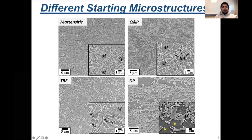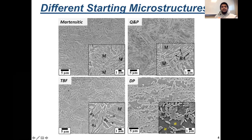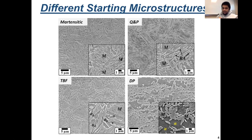We generated a fully martensitic microstructure. We generated a quenched and partitioned microstructure having martensite and retained austenite. We generated a TBF (trip-bainitic ferrite) microstructure through austempering having carbide-free bainite, and we generated a dual-phase microstructure having ferrite and martensite. The martensitic, Q&P, and TBF steels were generated through full austenitization of our cold roll panels. In contrast, the dual-phase microstructure was generated through intercritical annealing of the cold roll panels, followed by quenching to room temperature.